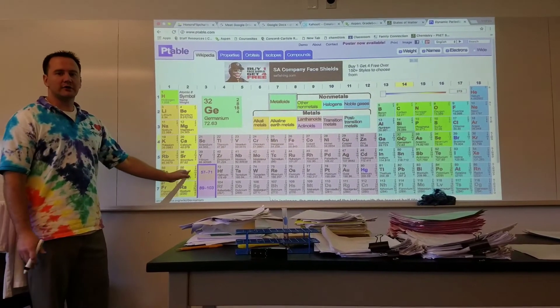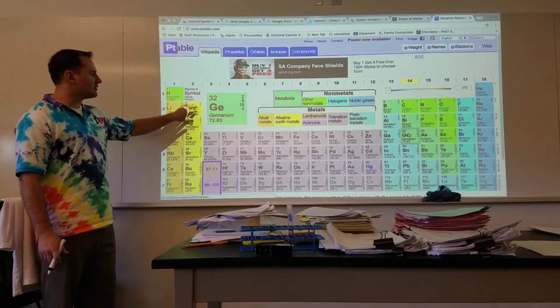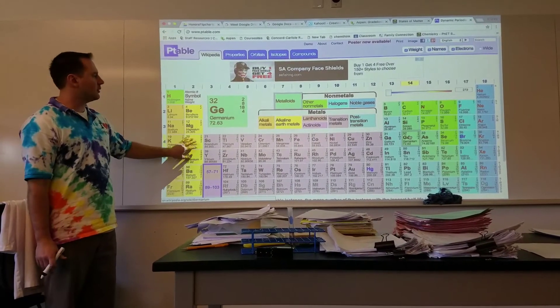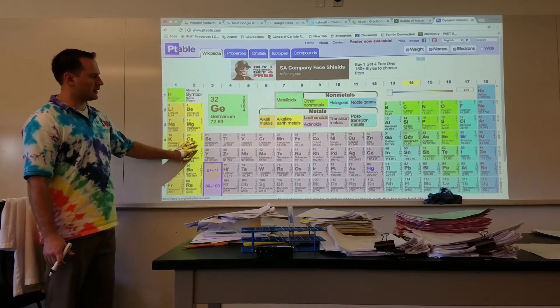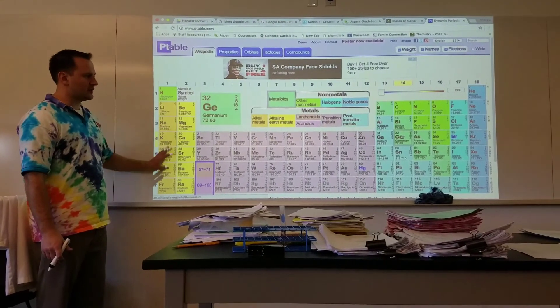The next group right here, the alkaline earth metals, are also very reactive. And these ones will typically form, or always form, positive 2 ions when in an ionic compound. These are the most reactive metals over here.